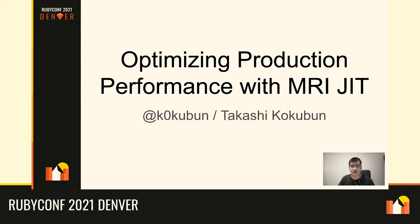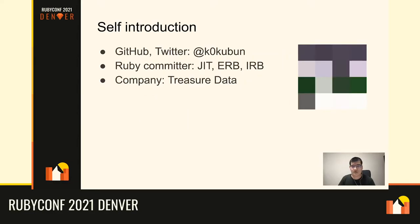Hi everyone, today I'm going to talk about optimizing production performance with MJIT. Let me introduce myself first. My name is Takashi Kokubun, and on the internet — GitHub and Twitter — I use the account ID Kokubun. I'm also working as a Ruby committer in my spare time.